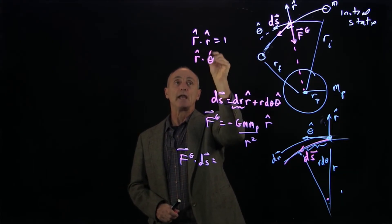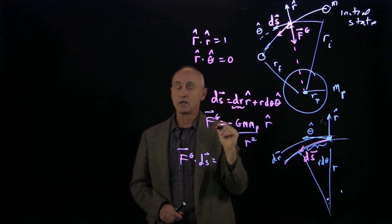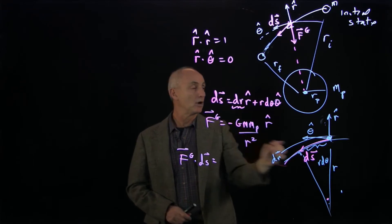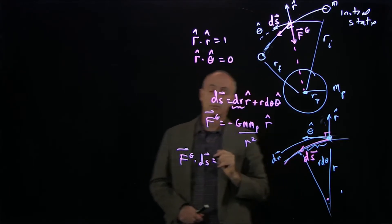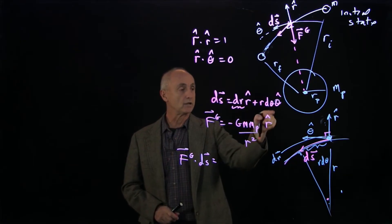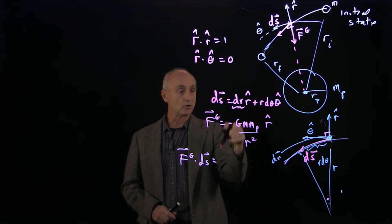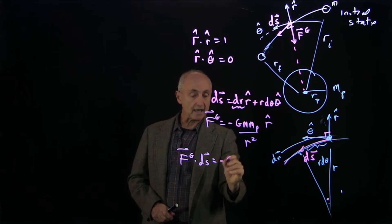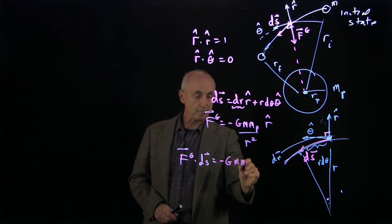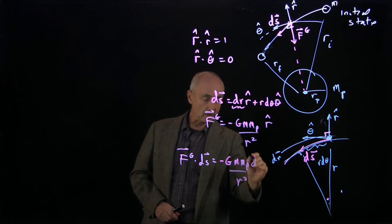Remember that any two vectors that are perpendicular have dot product 0. r hat and theta hat are perpendicular. So r hat dot r hat is 1, r hat dot theta hat is 0. So we only get minus G mp m over r squared dr.